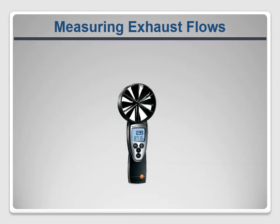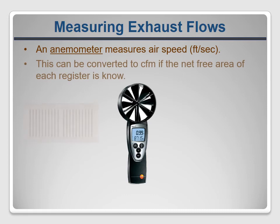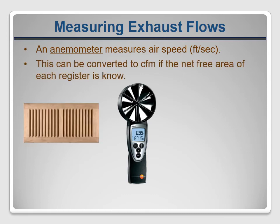The last option is called an anemometer, which has a propeller that measures the velocity of air going into or out of a register or grill, usually in feet per second. That's not enough on its own to evaluate the system, but if you multiply it by the area of the opening you can get the volumetric flow rate. You have to do some unit conversions to get measurements in inches and seconds to a final result in cubic feet per minute.